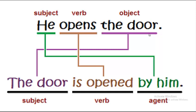Let's summarize the steps. For example: 'He opens the door.' The door is the object, so we start with 'the door,' followed by the verb 'to be' in the present. We use 'is' with singular and 'are' with plural. After that, we put the verb in the past participle, and finally the subject preceded by 'by.'